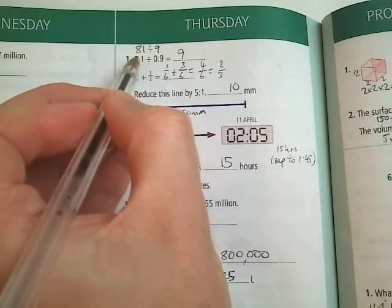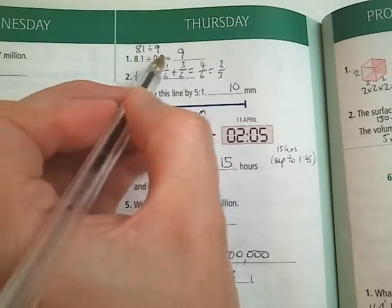Question 1: 8.1 divided by 0.9. That's the same as 81 divided by 9, your answer is 9.